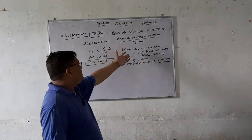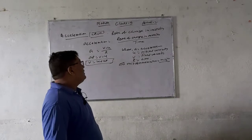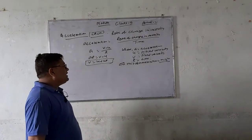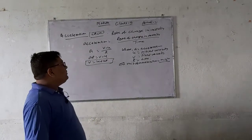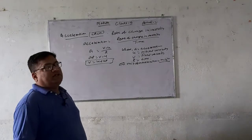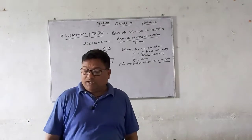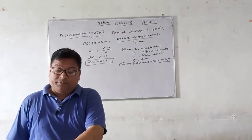In this equation, A is acceleration, U is initial velocity, V is final velocity, and T is time. The SI unit of acceleration is meter per second squared.